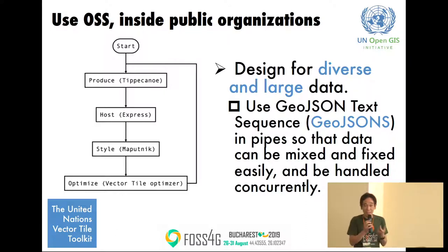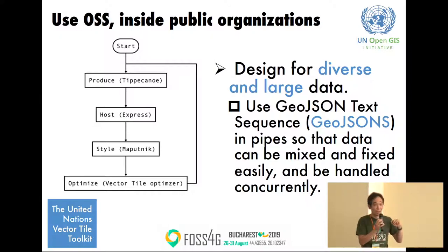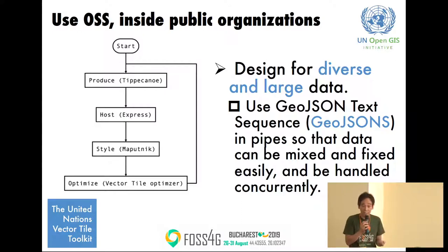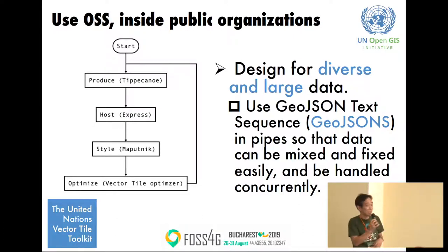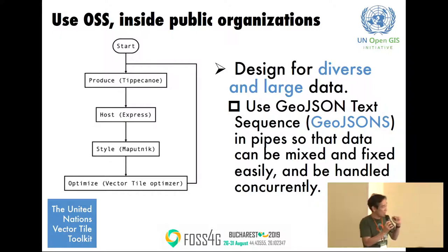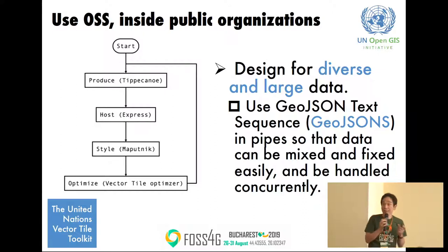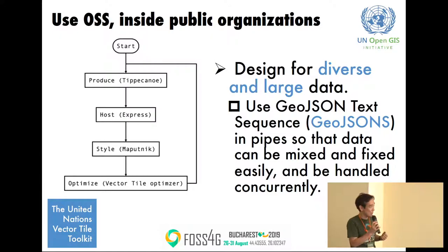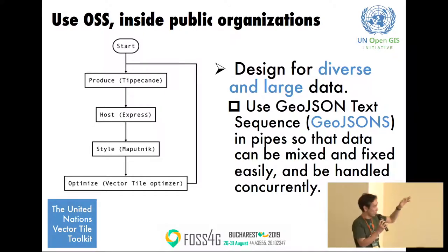In public organizations there are many different formats and different data. The challenge is how we can work with diverse data and large data — we need to work with gigabytes or tens of gigabytes to produce our base map. We try to stick to a stream-based computing model. By using this model, we can easily mix, fix, or handle streams concurrently, giving us more freedom to optimize processing for vector tile production. We also use the GeoJSON text sequence format as a wire format to connect existing software.